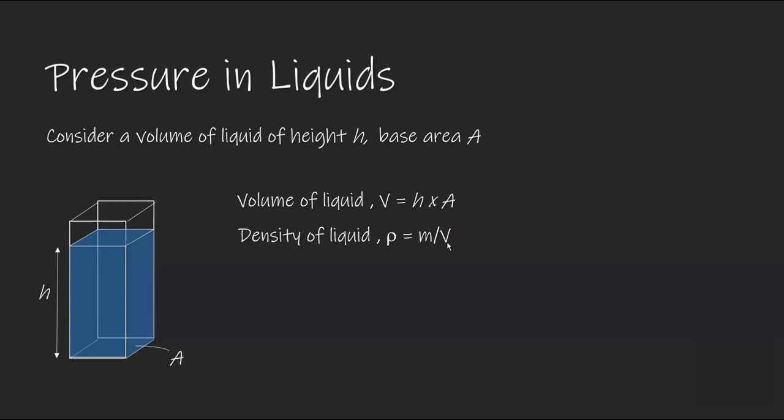So the mass of this liquid is its density times its volume. Therefore, the weight of liquid, which is mass times gravitational field strength g, would be equal to density ρ times the volume, which is height times base area A times g.